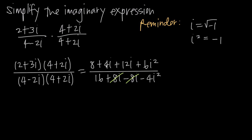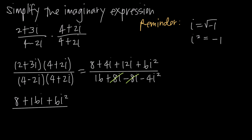Now we can combine like terms. In the numerator we're left with 8, then plus 4i plus 12i which is plus 16i, and then plus 6i squared. In the denominator we're left with 16 minus 4i squared.